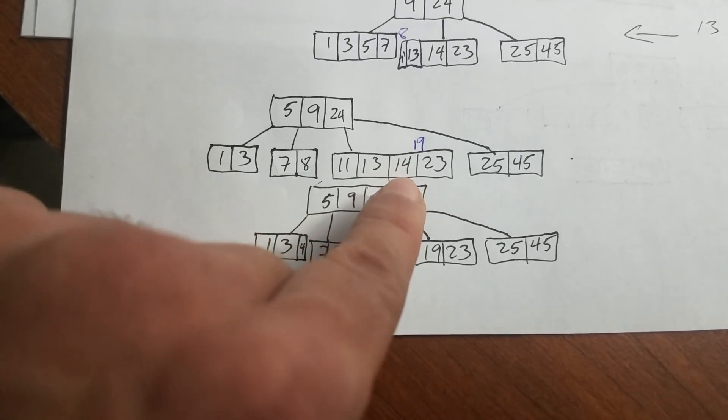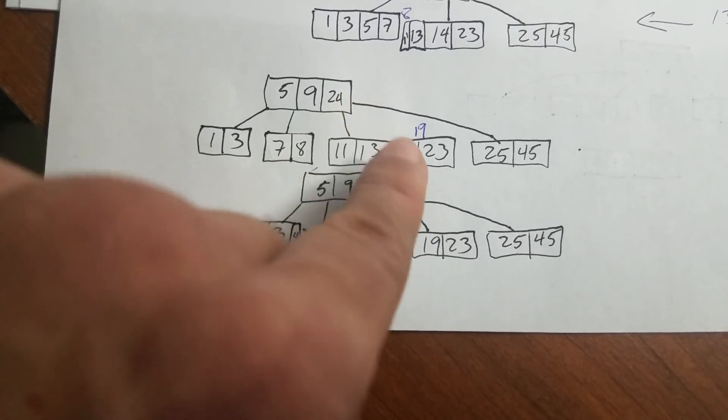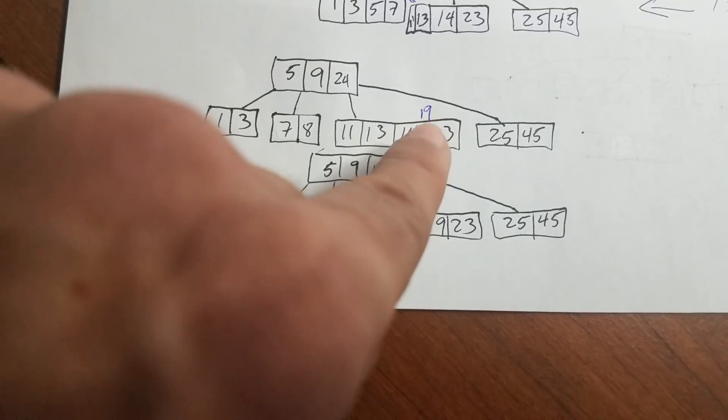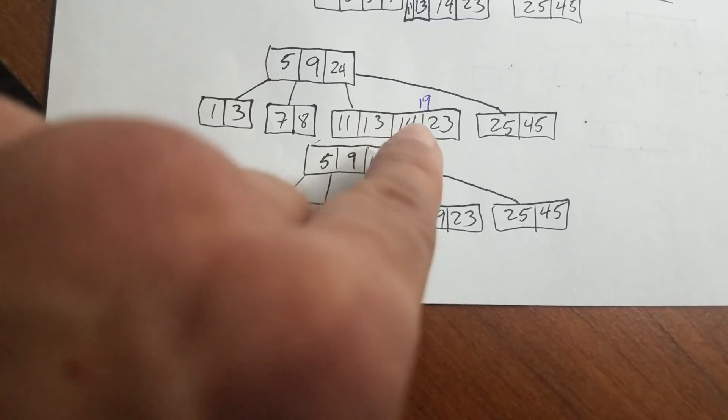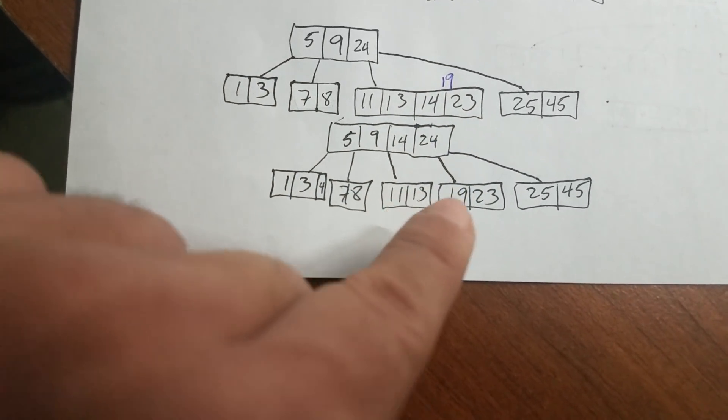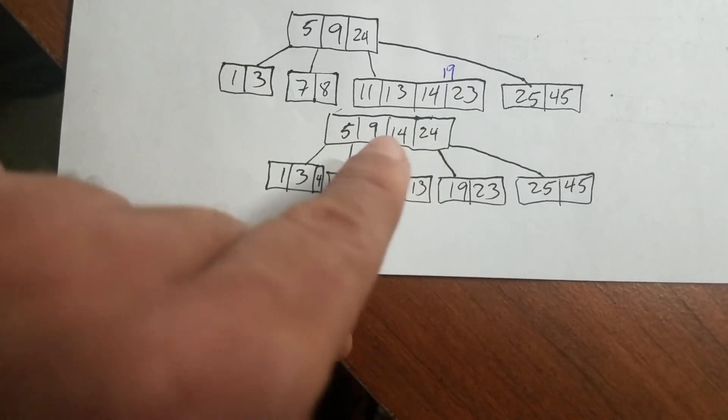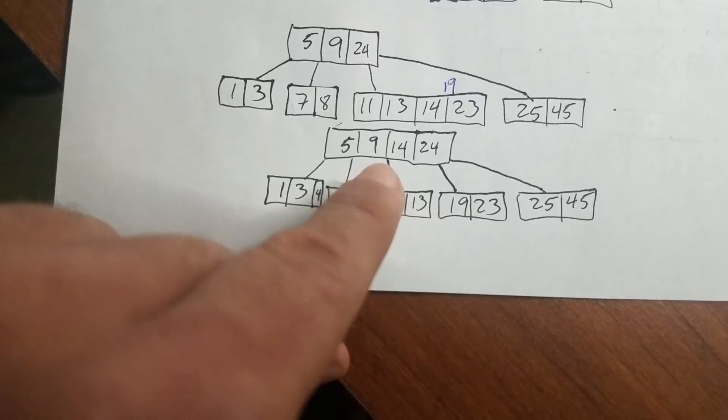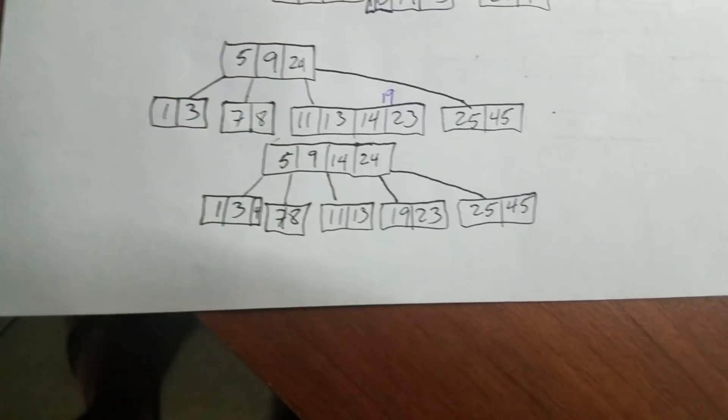Now, the middle number is going to be 14. So 14 is going to be promoted to the top and we're going to split all this node into two. 11, 13 and 19, 23. And the 14 got promoted. So this is a node here, the root. And this remains the same. So all we have is the same, right?